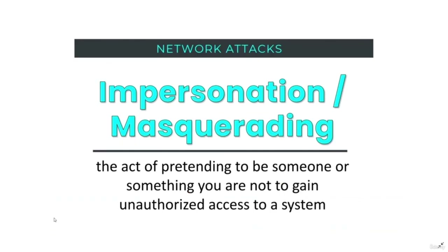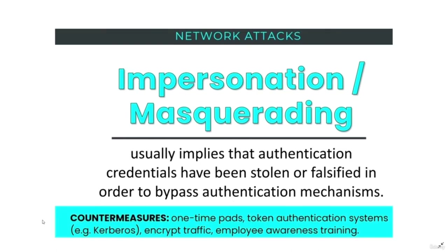Another type of network attack is impersonation or masquerading — the act of pretending to be someone or something you are not to gain unauthorized access to a network or system. Impersonation attacks usually imply that authentication credentials have been stolen or falsified to bypass authentication mechanisms. Countermeasures include one-time pads, token authentication systems, encrypting traffic, and employee awareness training.